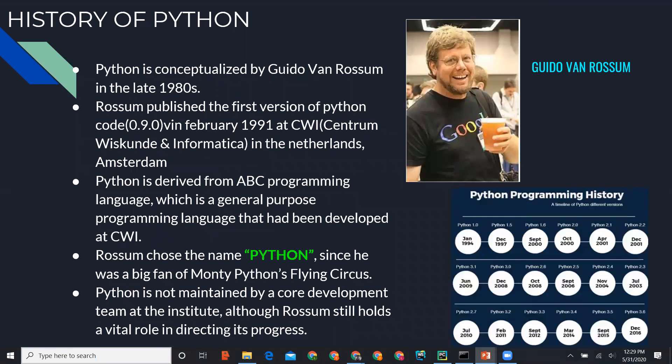Let's talk about a brief history of Python. Guido van Rossum developed the Python programming language in the late 1980s. His first version was 0.9.0, released in 1991. He was working in the Netherlands at the CWI research institute. Python was actually derived from the ABC programming language, which was being developed at CWI at that time.